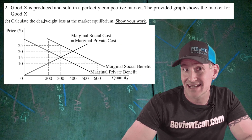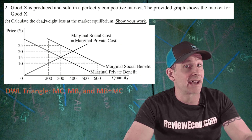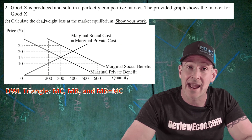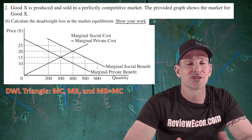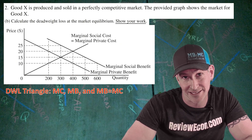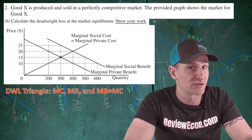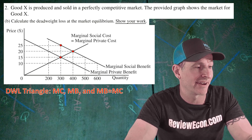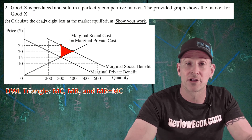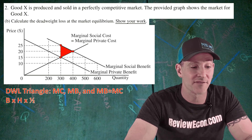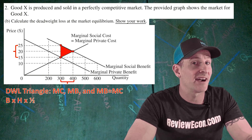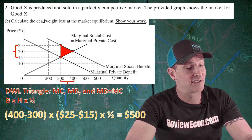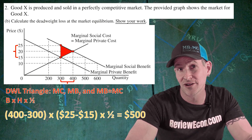For part B, we have to calculate the deadweight loss at equilibrium and show our work. To find the deadweight loss triangle, we find the marginal cost of the market quantity, the marginal benefit of the market quantity, and the marginal social benefit equals marginal social cost point. At our quantity of 300, we have our true marginal cost; above that is our true marginal benefit and the MSB equals MSC point. Those are the three points of our triangle. Base times height times one half: (400 − 300) × ($25 − $15) × 0.5 = $500.